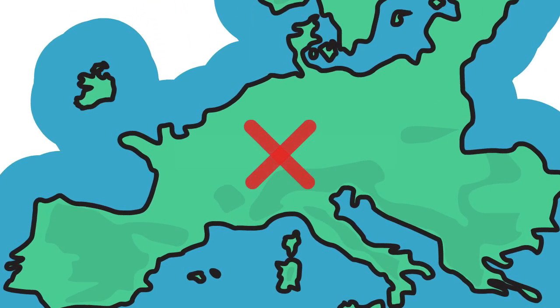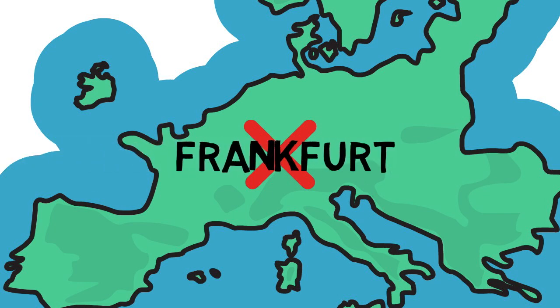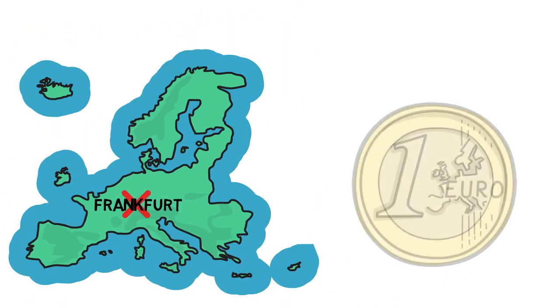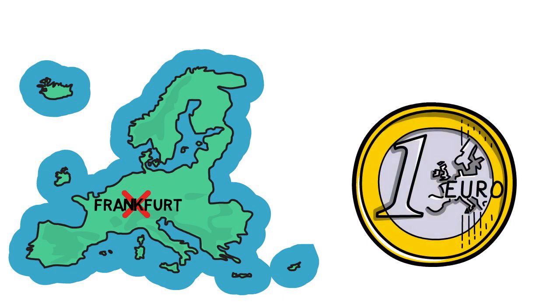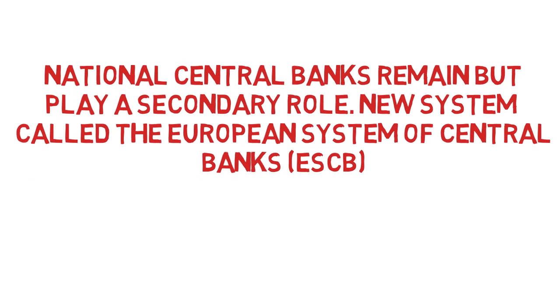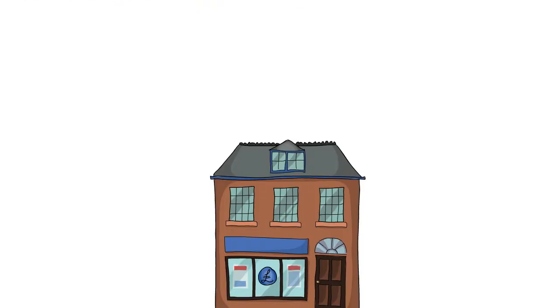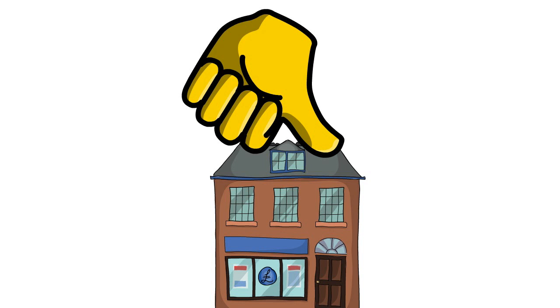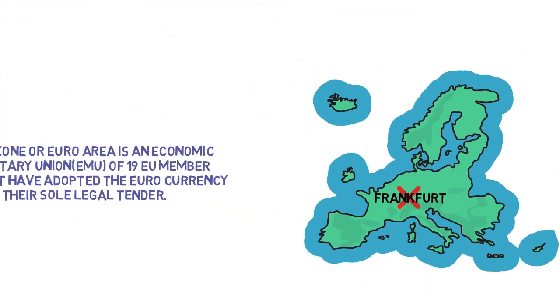For Europe we have the European Central Bank, located in Frankfurt in Germany. This controls the euro system and the money supply for 19 member countries. The system entails national central banks remaining, but they play a secondary role — this is called the European System of Central Banks, meaning individual national banks are now under the authority of the European Central Bank, which dictates policy for core Europe.